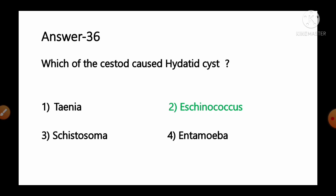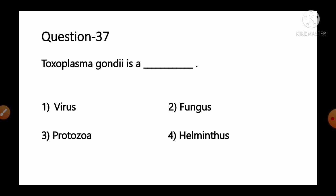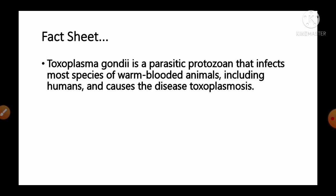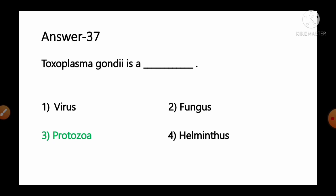Question number 37: Toxoplasma gondii is a — options: 1) virus, 2) fungus, 3) protozoa, 4) helminthus. Toxoplasma gondii is a parasitic protozoan that infects most species of warm-blooded animals including humans, and causes the disease toxoplasmosis. So option number 3, protozoa, is the correct answer.